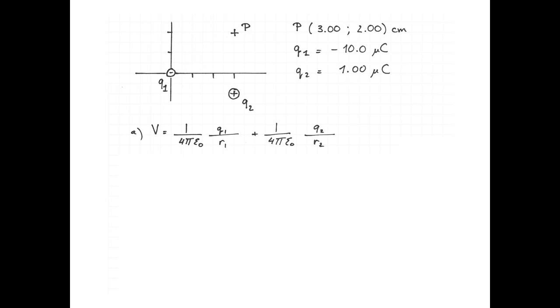The potential of a point charge is given by 1 over 4 pi epsilon naught Q over R. So to find the electric potential caused by two point charges, we add the electric potential of the first charge and the electric potential of the second charge.